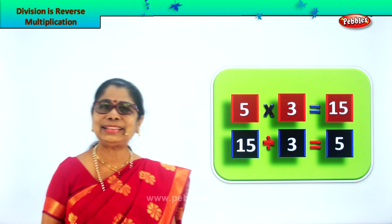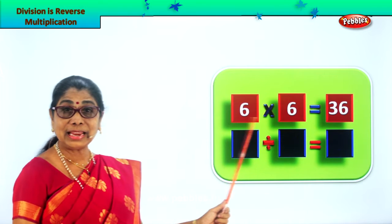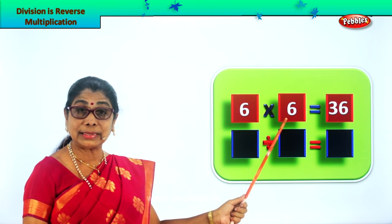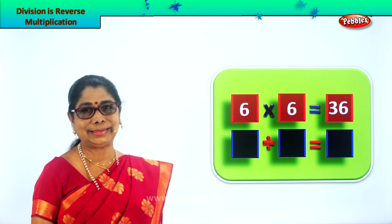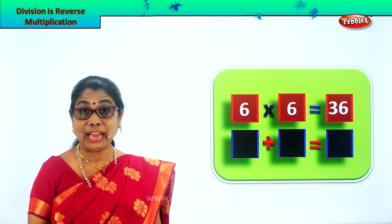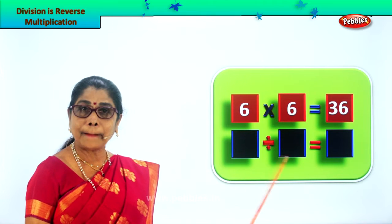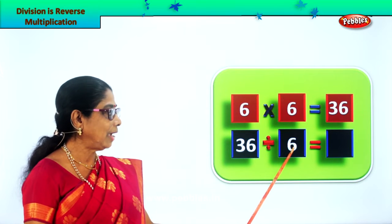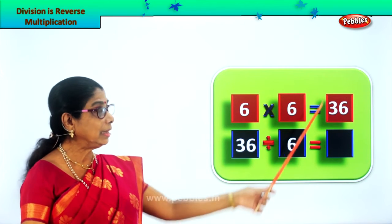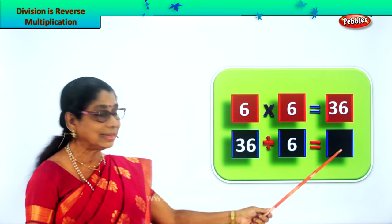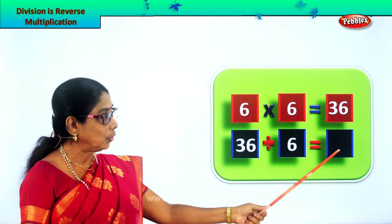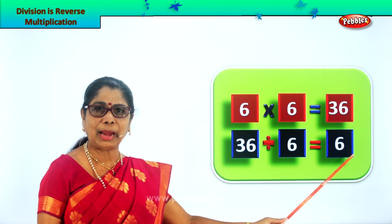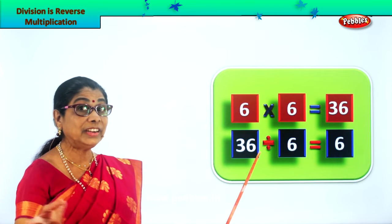We are learning division is reverse multiplication. Are you enjoying? Let's take another sum. Look. Six multiplied by six — six into six is equal to 36. Six multiplied by six. So you know your six times table. Now let's divide 36. We'll divide 36 by six — we write down 36 here divided by six. How many times will six go into 36? Six times. So your answer is six. Six sixes are 36. So your answer is 36 divided by six equal to six.